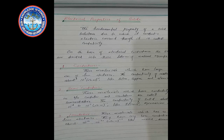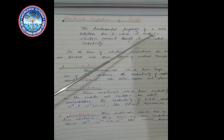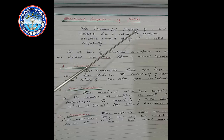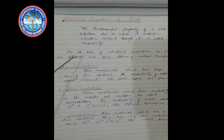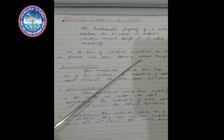Electric properties of solids: The fundamental property of a solid substance due to which it conducts electric current — that is, why it conducts electricity through it — is called conductivity. On the basis of electrical conductance, solids are divided into three groups.